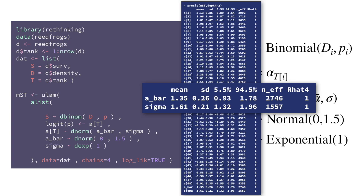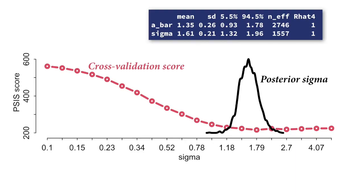Let's focus on sigma and alpha bar, since these are the parameters that talk about the population shape. The posterior mean for sigma is about 1.6, ranging from about 1.3 to 2. Revisiting our cross-validation exercise where I varied sigma by plugging in fixed values, if we combine these two things, the multilevel model identifies the same range of sigmas as the cross-validation exercise did. The multilevel model learns the prior that is expected to provide the best out-of-sample accuracy for these units.